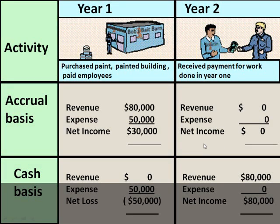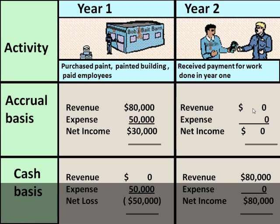But the second year, you had zero business because you closed your business. So the second year would show nothing using accrual accounting, because you've already booked your revenue in year one. Of course, you got payment for work done — but remember, that only affects the balance sheet accounts. You would debit cash for $80,000 and credit accounts receivable for $80,000.